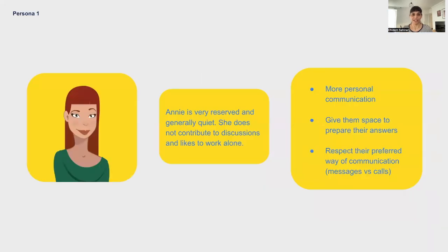Our first persona is Annie. Annie is very reserved and generally quiet. She does not contribute to discussions and likes to work alone. It seems like Annie has an introverted personality. Introversion is a scale — some people are more introverted than others, and it does not necessarily mean they are shy or unfriendly. Unlike extroverts who gain energy from social interactions, introverts consume energy in social situations.